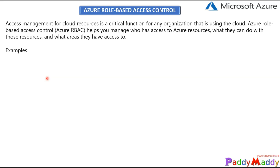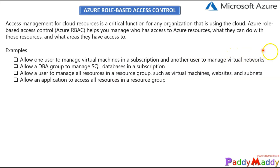Let's take some examples to understand how we can give permissions. Let's say you have a user who wants to manage virtual machines in a subscription — you can add that specific user to manage only the VMs. Or another user wants to manage only virtual networks — you can grant that kind of access. Or maybe you have a SQL DBA group who just wanted to manage all the SQL databases in your subscription — if you want to grant that explicit permission, you would depend on RBAC.